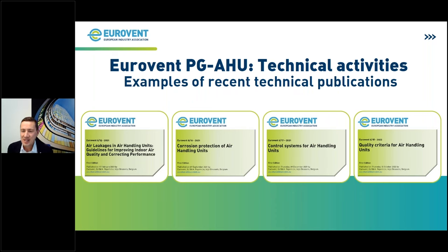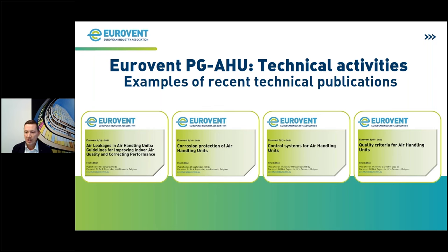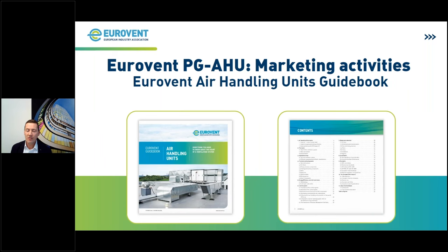Here you can see some results of our technical activities. During the last years, we have published technical and helpful documents. One example is a document that deals with air leakages in air handling units. We have also published a paper that deals with corrosion protection control systems for air handling units. And today's topic is quality criteria for air handling units — for that, we have also developed a paper where you find a lot of useful information.